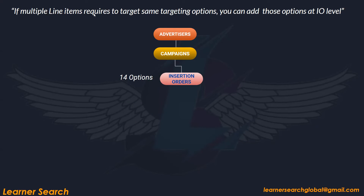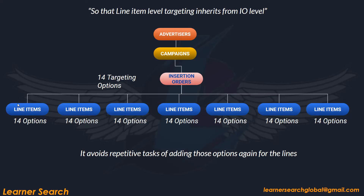If multiple line items require the same targeting options — meaning all line items share a common requirement — you can add those options at IO level. For example, if you're working with a client targeting the US region, English language, specific brand safety requirements, and 70% viewability, set these standard options at insertion order level. The same targeting options will be inherited by all line items below, avoiding the repetitive task of adding them each time a new line item is created.